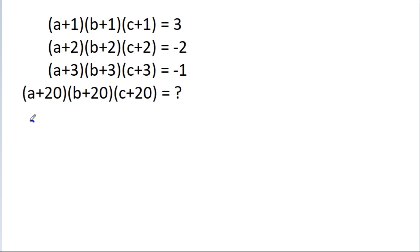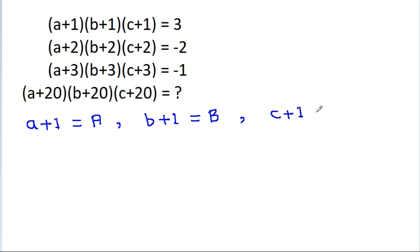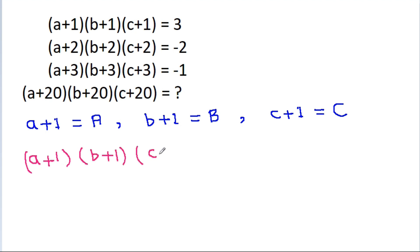So, if we take a+1 equal to capital A, b+1 equal to capital B, and c+1 equal to capital C, then (a+1)(b+1)(c+1) becomes A times B times C, which is equal to 3.